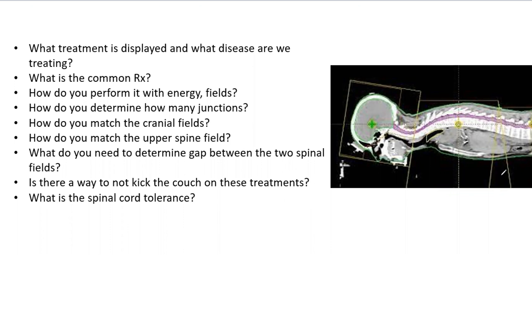What is the common prescription? How do you perform it with the energy and fields? How do you determine how many junctions there are? How do you match the cranial fields and the upper spine field? What do you need to determine the gap size between two spinal fields? Is there a way to not have to kick the couch on the treatments? And what is the spinal cord tolerance?